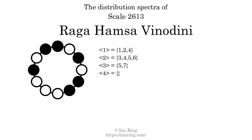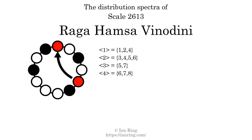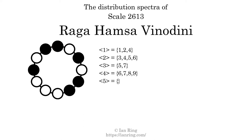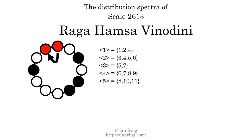The generic interval of four scale steps comes in four different specific interval sizes: 6 semitones, 7 semitones, 8 semitones, and 9 semitones. The spectrum width of this generic interval is 3. The generic interval of 5 scale steps comes in 3 different specific interval sizes: 8 semitones, 10 semitones, and 11 semitones. The spectrum width of this generic interval is 3.